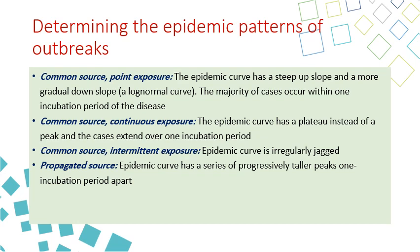When determining the epidemic pattern, common source point exposure shows a steep upward slope followed by a more gradual downward slope — a single wave lasting a few days. Common source continuous exposure shows a similar shape but with a plateau, extending over a longer period of similar case levels. Common source intermittent exposure produces multiple separated waves with gaps between them, like a contaminated batch of medication causing cases when used and disappearing when not used.